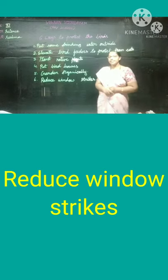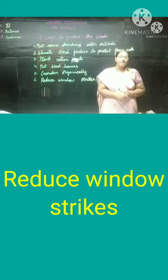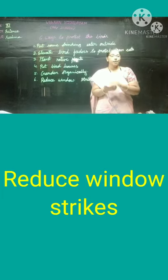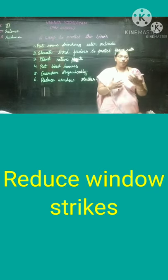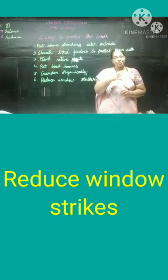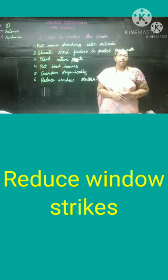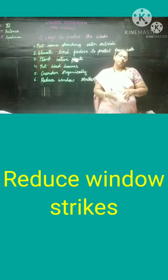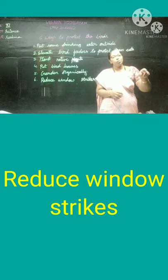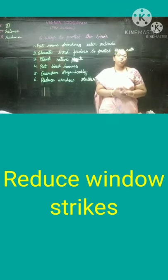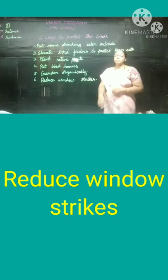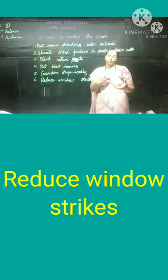The sixth way is to reduce window strikes. Birds will sit near your window and knock on it because the glass acts as a mirror — they see their own reflection and think another bird is there. Wanting to make friends, they keep striking the window and can die. So we should avoid or reduce window strikes, as this is one of the biggest causes of bird deaths.